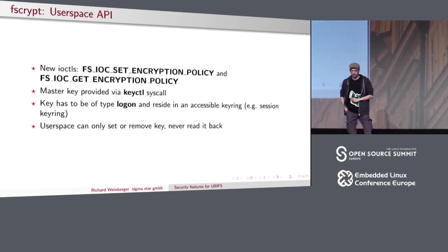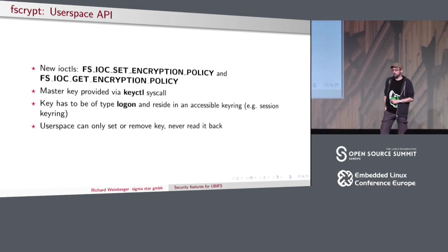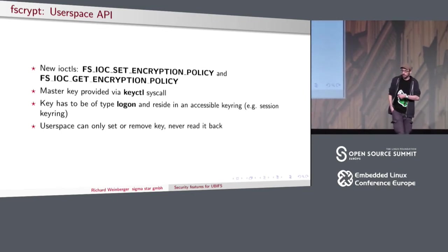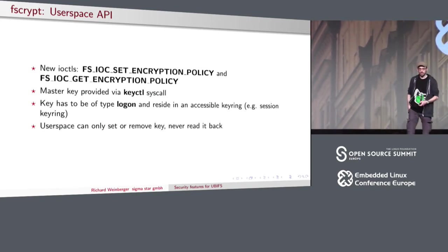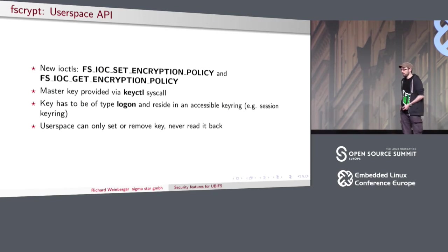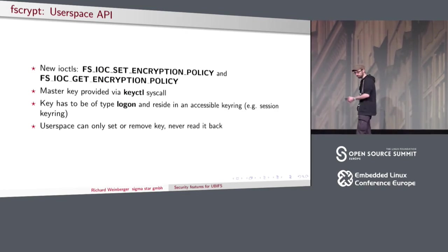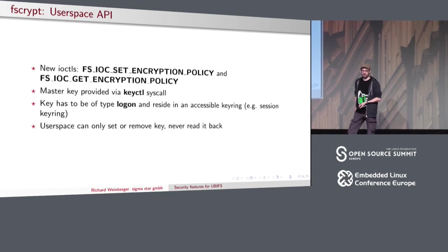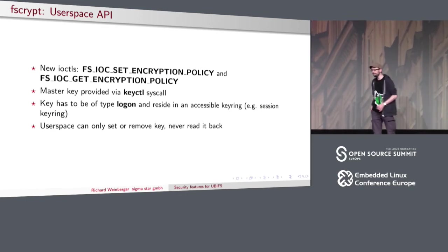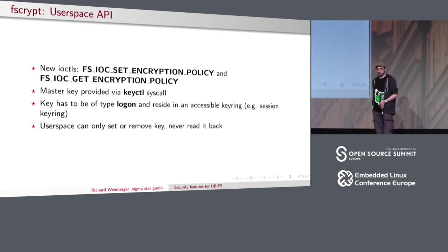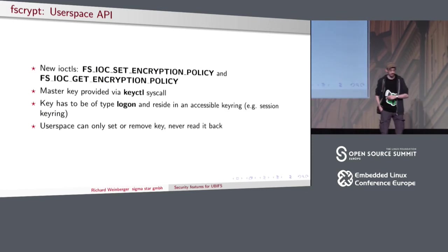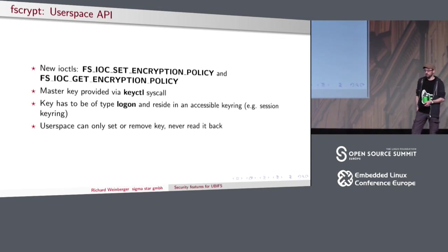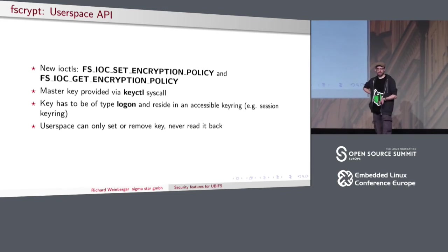The user space API is actually rather simple — just two ioctl calls. These ioctls are file-system-level: you can get and set the policy, so you can open a directory on ext4, UBIFS, or F2FS and run the ioctl to apply a policy, and also read the policy back to verify it works. Then you use the keyctl system call to load the master key. The key must be of type 'logon', usually a logon key in your session keyring, because user space can only set it, not read it back.